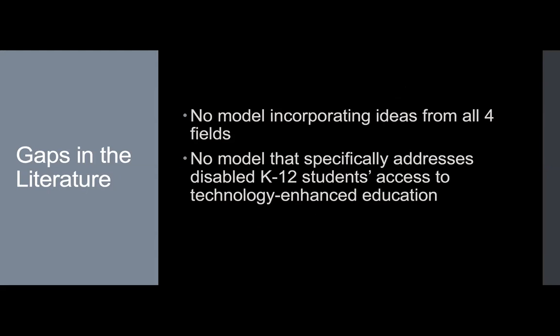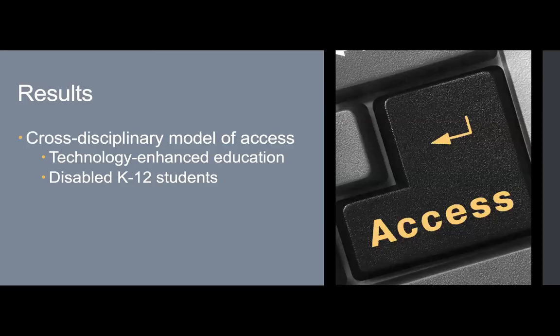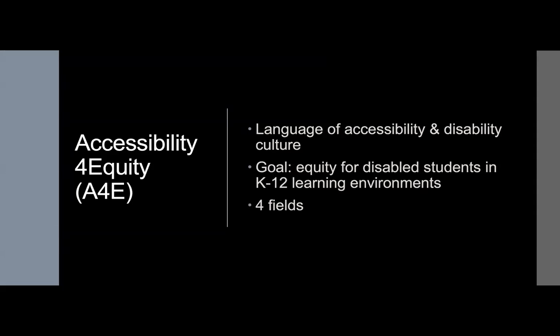In glancing across the literature in all four fields, two critical gaps are evident. First, though some cross-disciplinary models of access are available, no one model that incorporates ideas from all four fields is available. Second, no model exists that specifically addresses disabled students' access to technology-enhanced K-12 education. Therefore, I developed a cross-disciplinary model of access to technology-enhanced education that specifically focuses on K-12 and disabled students, to attend to the complex problem of equity in the digital age within the deep-rooted public institution of K-12 education. The proposed model of access attempts to address the messy interactions between humans, technologies, cultures, and social structures in a composite framework. The name of the cross-disciplinary framework is Accessibility for Equity.